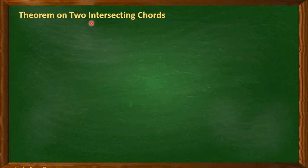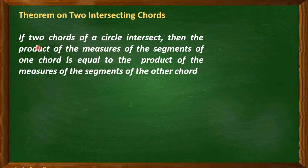The Theorem on Two Intersecting Chords states that if two chords of a circle intersect, then the product of the measures of the segments of one chord is equal to the product of the measures of the segments of the other chord.